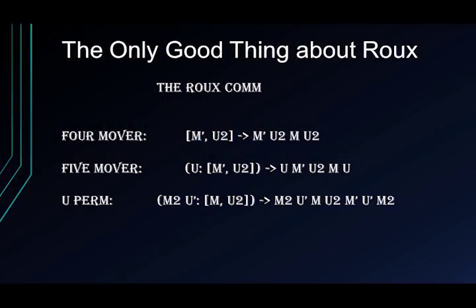Here's an interesting thing — the four-mover, also known as the Rue Comm. If you're familiar with Rue, this is kind of the last step for the last six edges. Try that four-mover on your cubes — that's the commutator notation written out on the right side. It's really fast and really useful to know. You can set up to it with a U move — that's what we call the five-mover because you cancel the end. You have to understand how to do Rue comms everywhere: with E moves, S moves, M moves — everywhere. So important.